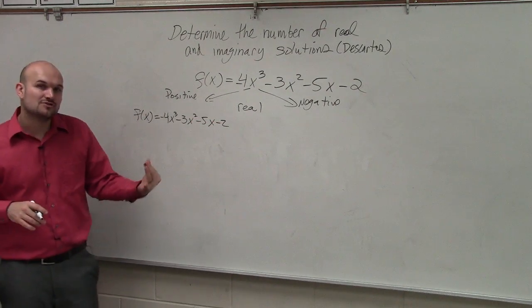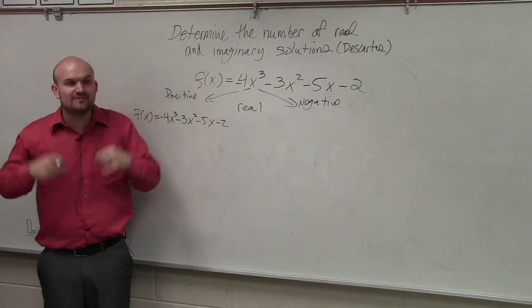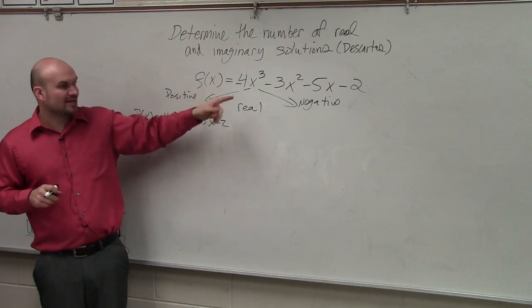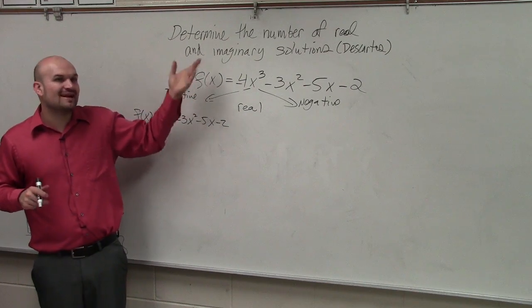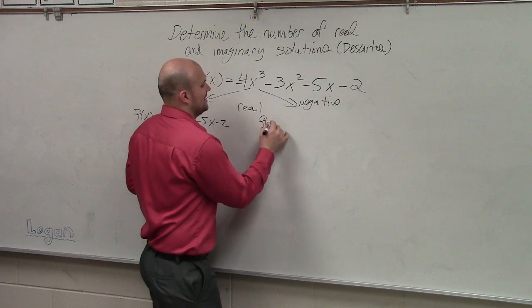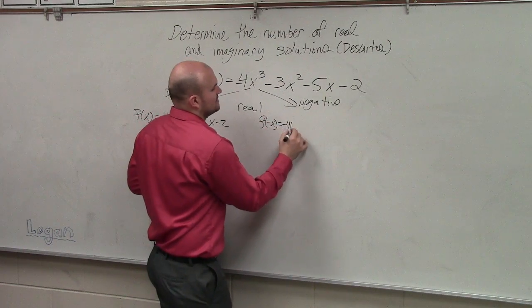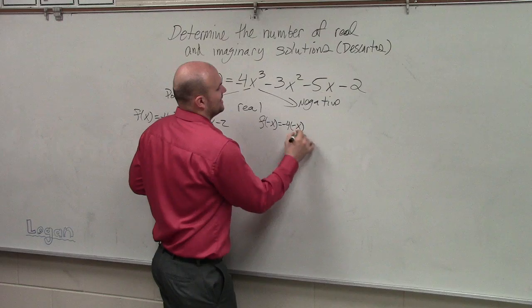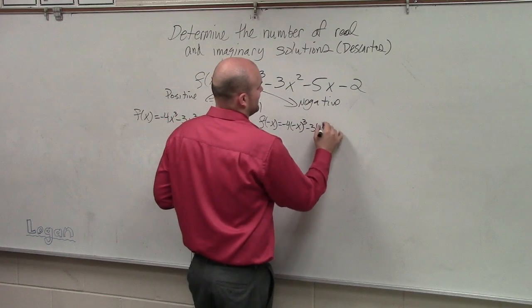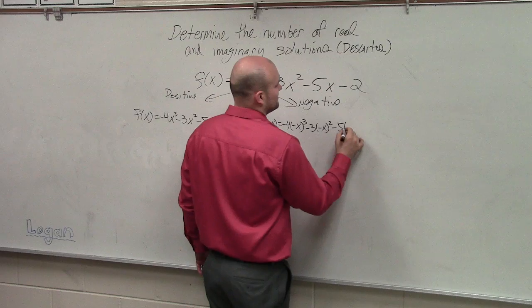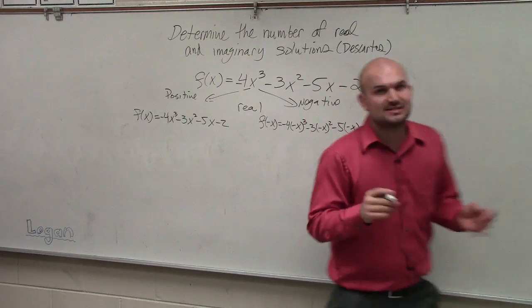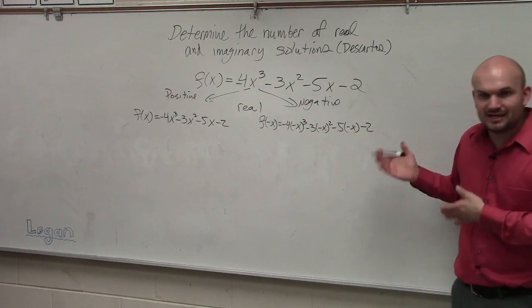Now to determine the number of negative real zeros, we are going to plug in f of negative x. So we're going to do f of negative x equals negative 4 times negative x cubed minus 3 times negative x squared minus 5 times negative x minus 2. Does everybody see how I plugged in negative x?